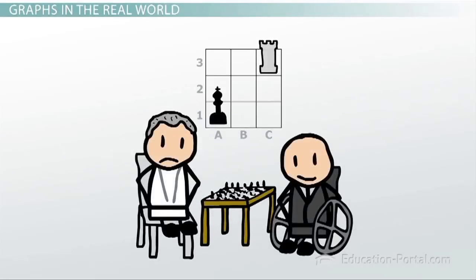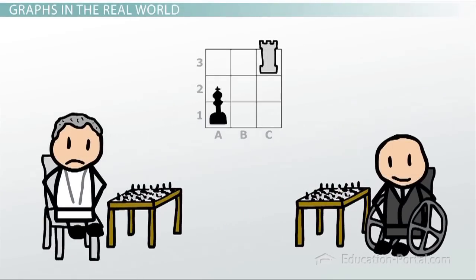People can play chess that are in totally different places by saying things like, I move my queen from A1 to A3. And that vocabulary allows them to express exactly what they're meaning without having to draw a picture that's physically there.